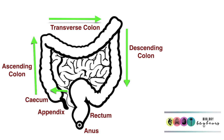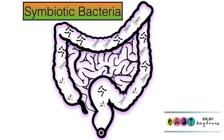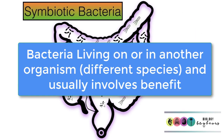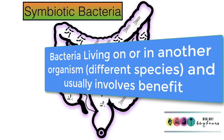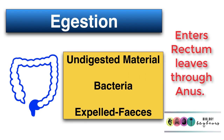Anything undigested leaves the small intestine and enters the large intestine, the first portion of which is known as the cecum. In the colon, water is reabsorbed, which is mostly what happens there. The colon is home to many symbiotic bacteria — bacteria living in another organism of a different species in a relationship that usually involves mutual benefit. For example, bacteria gain food and a habitat in our colon, and in return we gain vitamins B and K, and pathogenic bacteria are controlled. Finally, undigested, unabsorbed material and bacteria enter the rectum and are expelled through the anus.